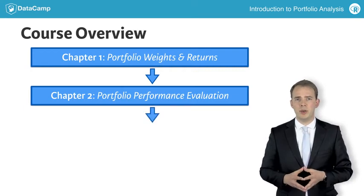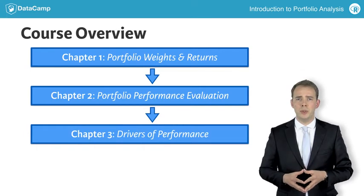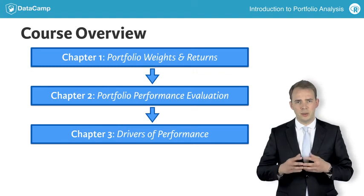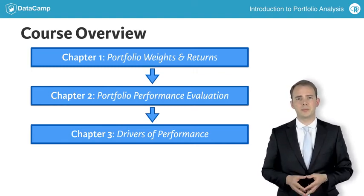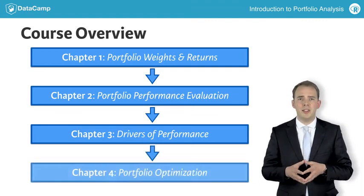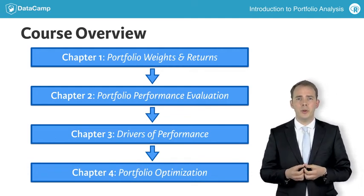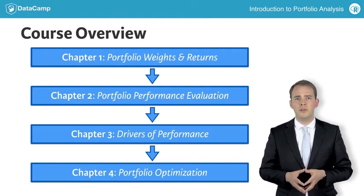Chapter 3 is about drivers of portfolio performance. I will show you how the individual risk and rewards of different investments in the portfolio interact with each other to determine the total portfolio return and risk. Finally, in chapter 4, I will show you how to optimize the portfolio weights in such a way that the obtained portfolio cannot be beaten by any other portfolio in terms of offering a higher expected return for the same or lower level of risk.